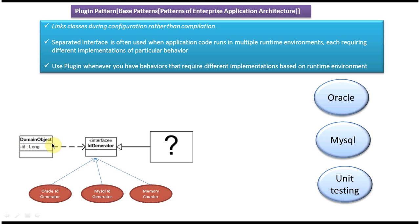Here you can see the domain object, and for ID generation we have defined an interface called ID Generator. This is the interface that is implemented by Oracle ID Generator, MySQL ID Generator, and Memory Counter, which will be used for unit testing. So we are using three different kinds of ID generation classes.